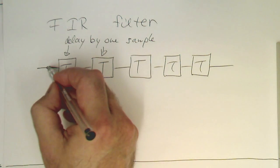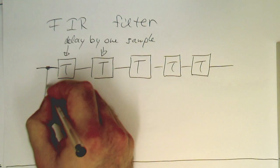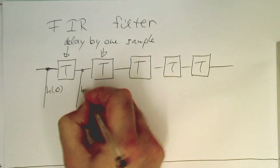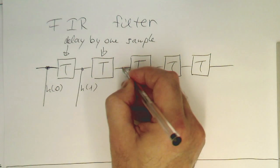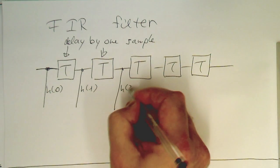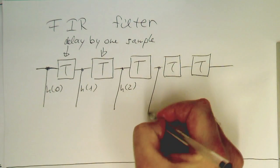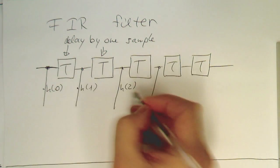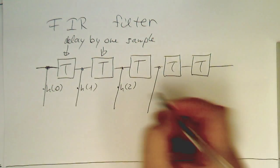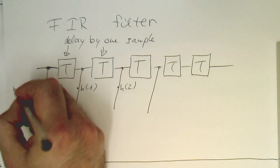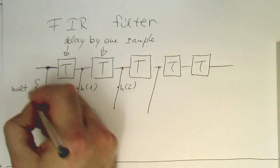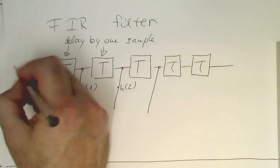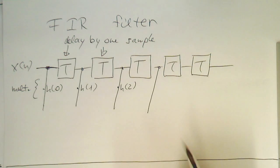And then what we do is we multiply this by H(0), this here by H(1), by H(2), so these are all multiplications here. This is our input signal X(n), so these are multiplied by these factors here.